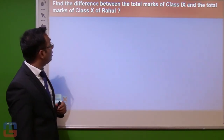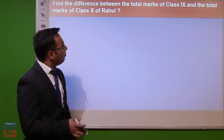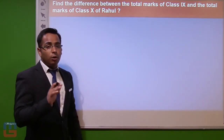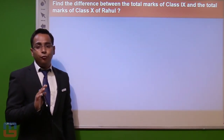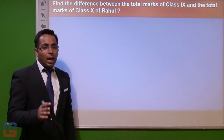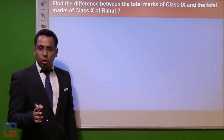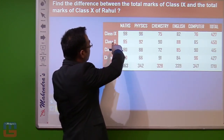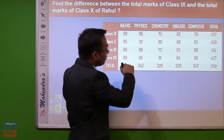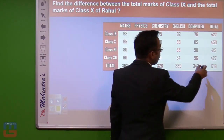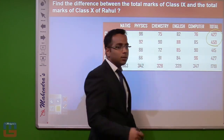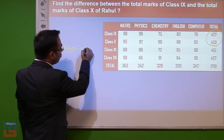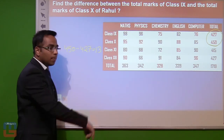Question 2: Find the difference between the total marks of class 9 and class 10 of Rahul. From the completed table, class 9 total is 427 and class 10 total is 450. The difference is 450 minus 427, which equals 23.